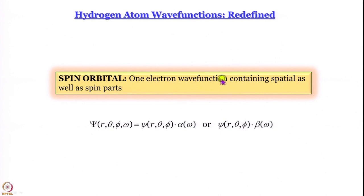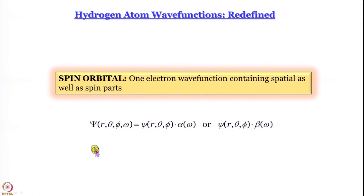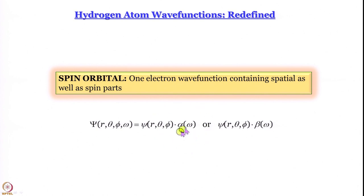Now, if you want to talk about multi-electron atoms, it is not sufficient to talk about n, l, and m — you also have to talk about ms. Remember, ms for all electrons: s is always 1/2. The total wave function ψ, which is a function of r, θ, φ, and ω (the spin coordinate), is given by ψ(r, θ, φ) — the spatial wave function — multiplied by the spin wave function α or β.